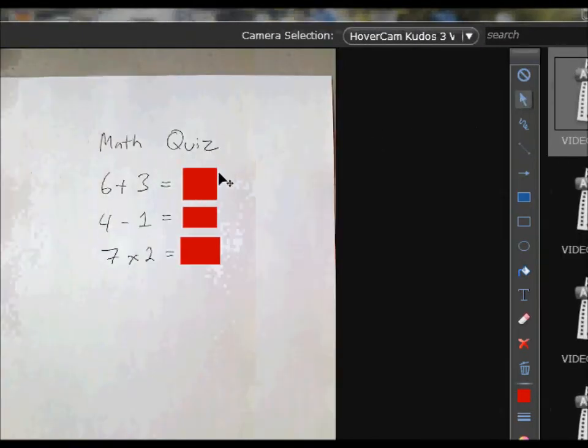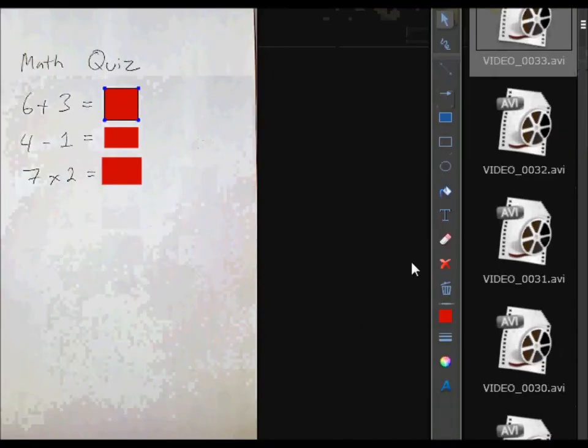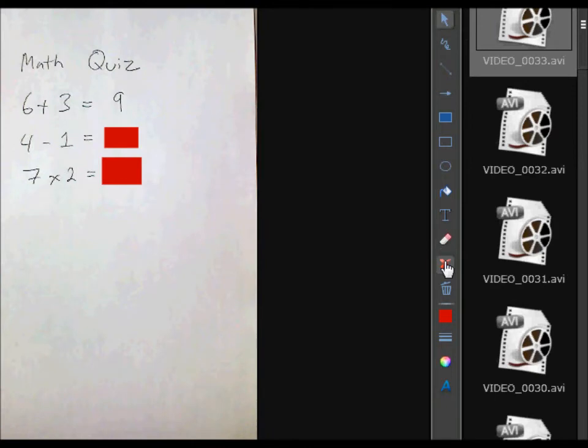So I use the select tool to select one of my masks and then as I ask the class, you know, what is 6 plus 3? When they give me my answer I can go over to delete here, this X, and then reveal the answer.